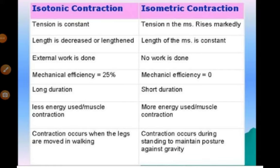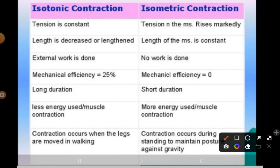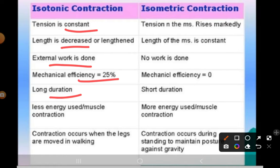In isotonic contraction, the tension is constant and the length is decreased or increased, so external work is done. Mechanical efficiency is 25 percent. Isotonic contraction occurs for a long duration and less energy is used. An example is contraction that occurs when the legs are moved in walking.